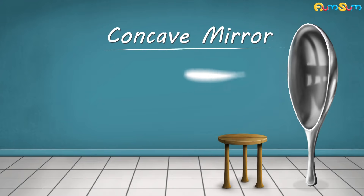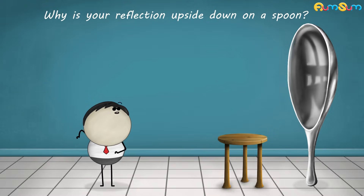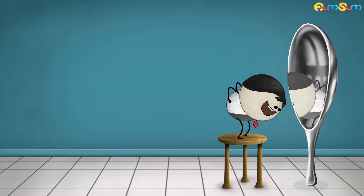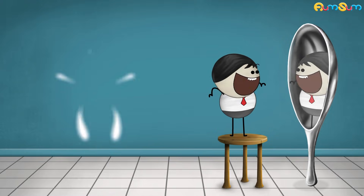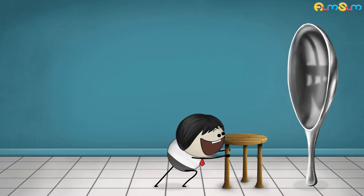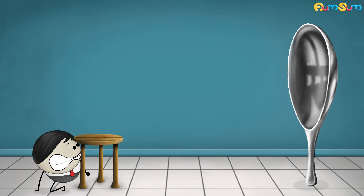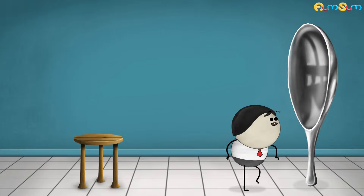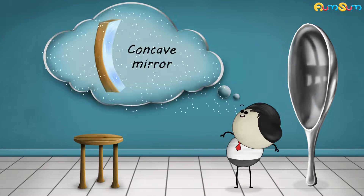Topic: Concave mirror. Why is your reflection upside down on a spoon? Looks like you are getting ready to go to a party. Why don't you stand here and look into the spoon? Your image appeared upside down because of the inward curve of the spoon. The surface of the spoon which is curved inwards acts like a concave mirror.